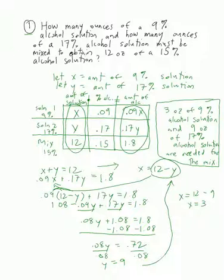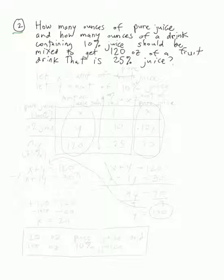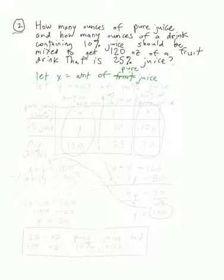And that is it for problem 1. Let's do problem 2. How many ounces of pure juice and how many ounces of a drink containing 10% juice should be mixed to get 120 ounces of a fruit drink that is 25% juice? We're going to let x equal the amount of pure juice and y equal the amount of 10% juice.